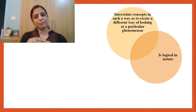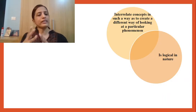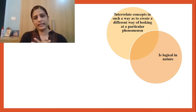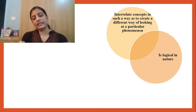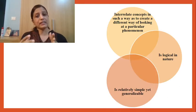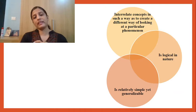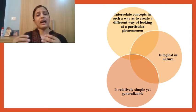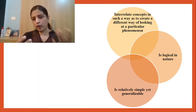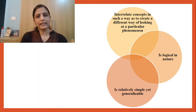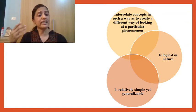Coming to the second characteristic, a theory should be logical in nature. Logical includes two types of reasoning: inductive reasoning and deductive reasoning. Orem's theory has been tested by a lot of research studies using both inductive and deductive reasoning, and so it satisfies the second characteristic. Number three, a theory should be simple and at the same time generalizable. Many researchers have already used this theory in their research projects. Self-care is applicable for a toddler, for an elderly, for male or female, Asians, Americans or Africans. So it is a generalizable theory and satisfies the third characteristic.